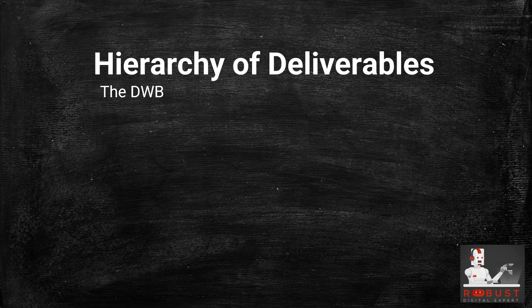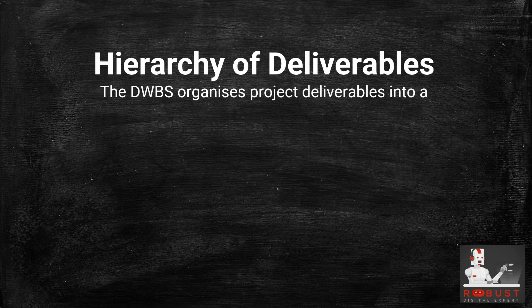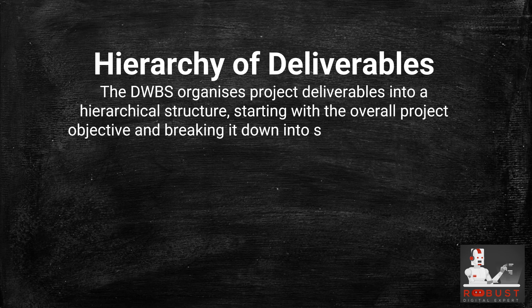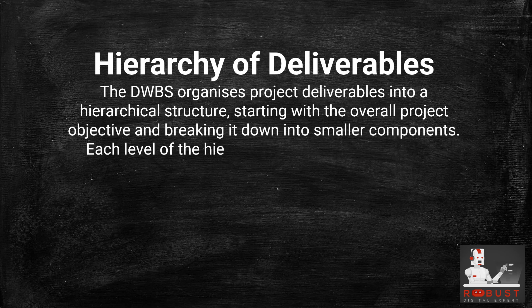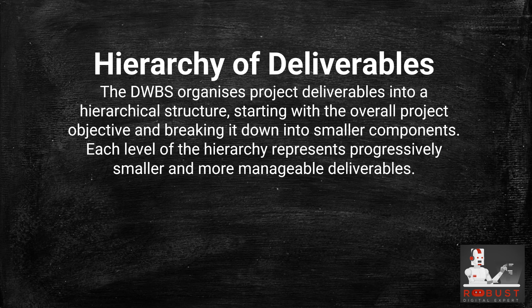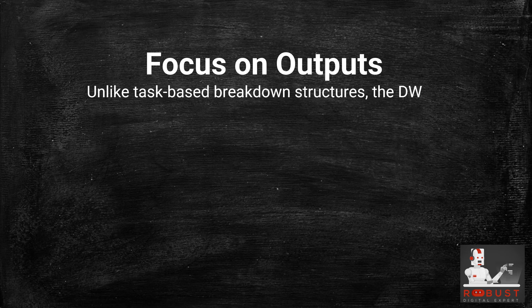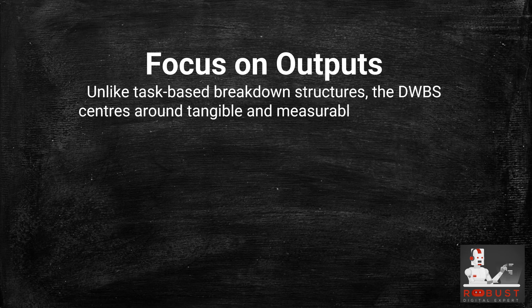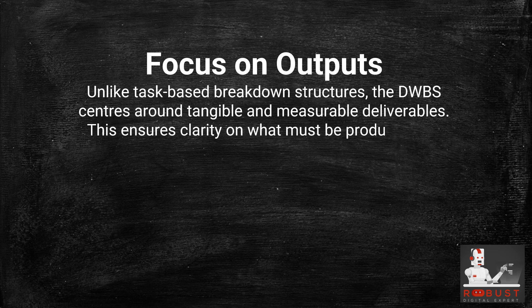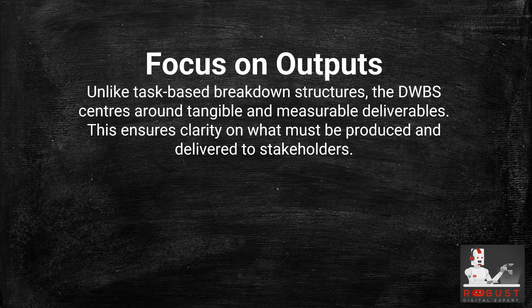Detailed Explanation. Hierarchy of deliverables: The DWBS organizes project deliverables into a hierarchical structure, starting with the overall project objective and breaking it down into smaller components. Each level of the hierarchy represents progressively smaller and more manageable deliverables. Focus on outputs: Unlike task-based breakdown structures, the DWBS centers around tangible and measurable deliverables, ensuring clarity on what must be produced and delivered to stakeholders.